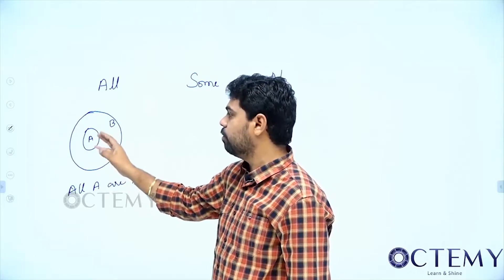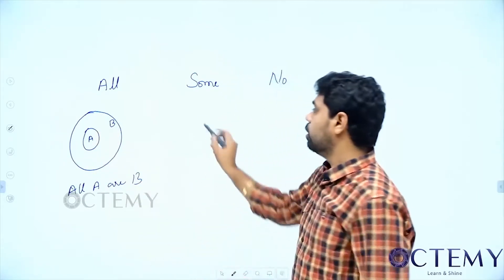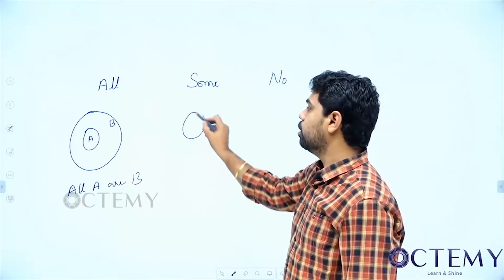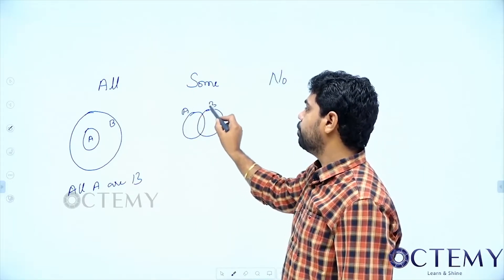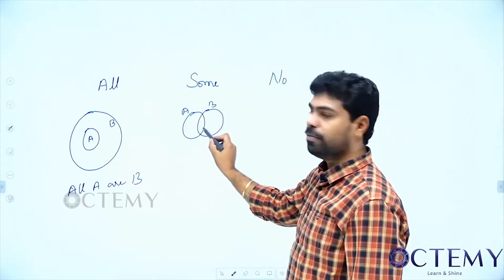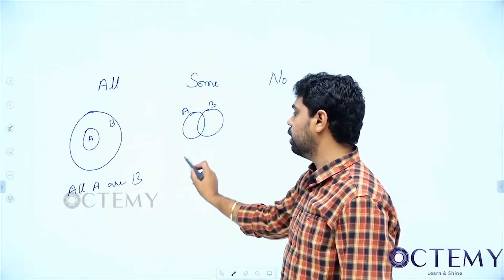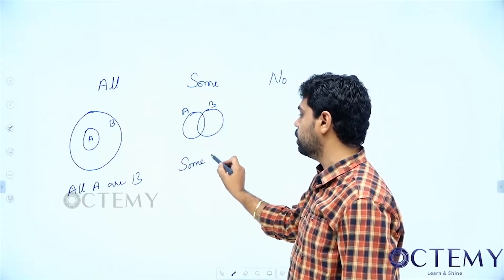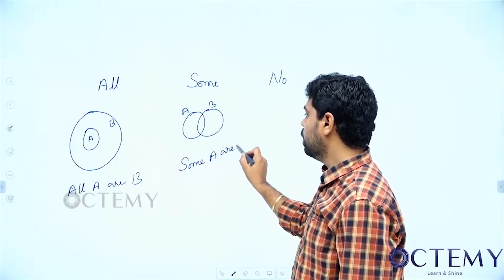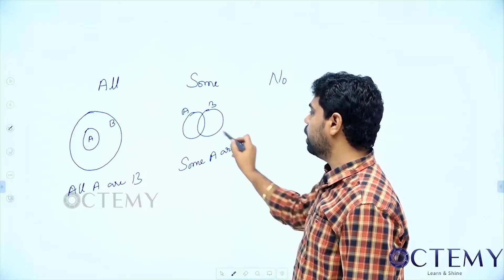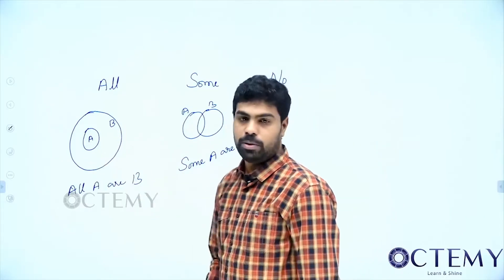All A are B — that is how we represent 'all.' For 'some': some A are B means some part of A is B and some part of B is A. We represent 'some' with an overlapping intersection. Some A are B, or equivalently some B are A — both can be stated.